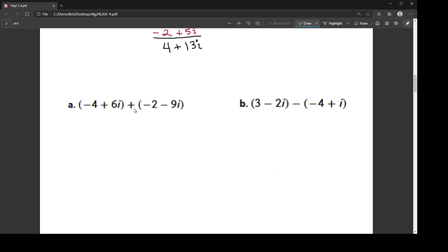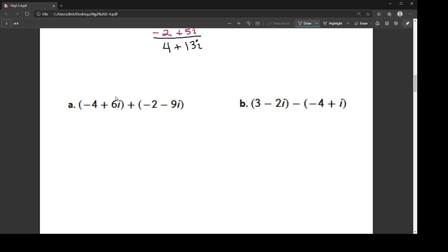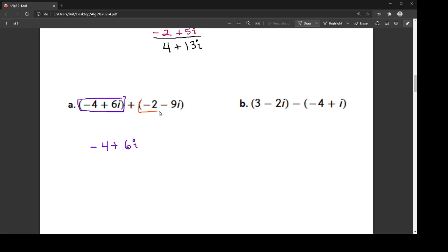So they tend to write these out sideways like this. I have just such a hard time seeing it, so I'm just going to stack mine. So I have negative 4 plus 6i. Now, this is addition, so for addition, I don't need to change the signs at all. All that I'm going to do is make sure that my like terms are lined up. So I'm going to have negative 2 minus 9i.